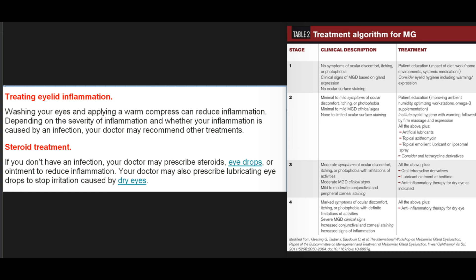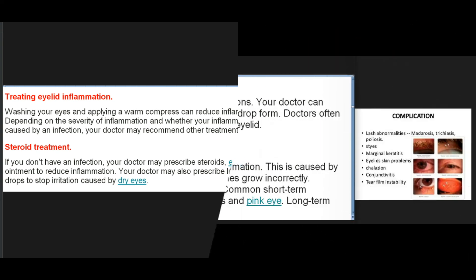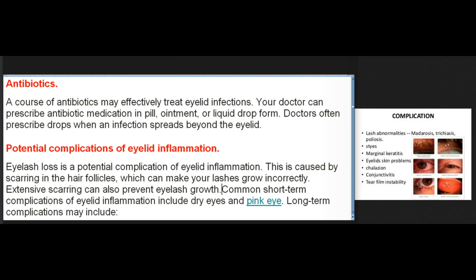If there are symptoms of an infection, your doctor will swab your eye and take a sample of any fluid seeping from your eyes — this sample is then examined under a microscope. Treating eyelid inflammation: Washing your eyes and applying a warm compress can reduce inflammation. Depending on the severity and whether caused by infection, your doctor may recommend other treatments. Steroid treatment: if you don't have an infection, your doctor may prescribe steroid eye drops or ointment to reduce inflammation, and may also prescribe lubricating eye drops to stop irritation caused by dry eyes.